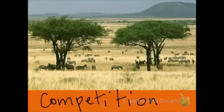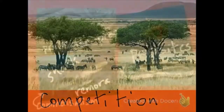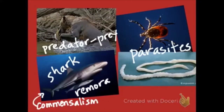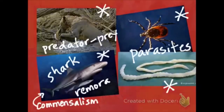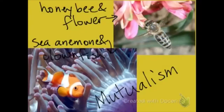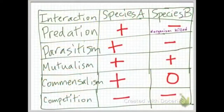Intra-specific competition occurs when several animals of the same species compete for the same resource. These pictures show several symbiotic relationships: predator-prey, commensalism with the shark and the remora, and two parasites — the deer tick and the tapeworm. Here are two examples of mutualism: the honeybee with the flower and the clownfish with the sea anemone. You will need to draw this chart in your notes and add the examples that were given in the video.